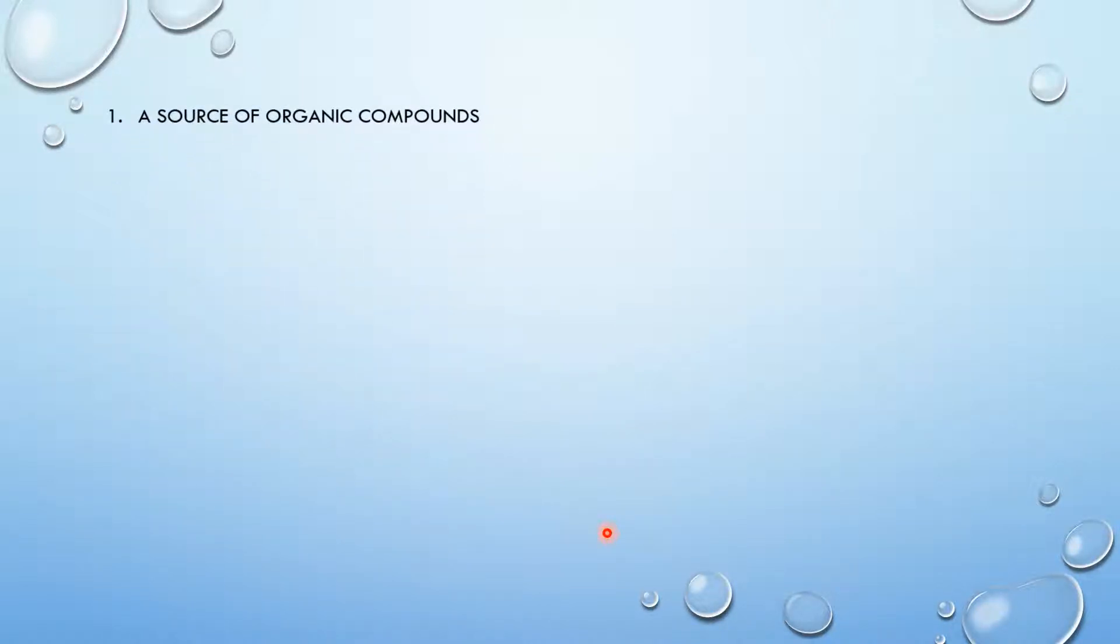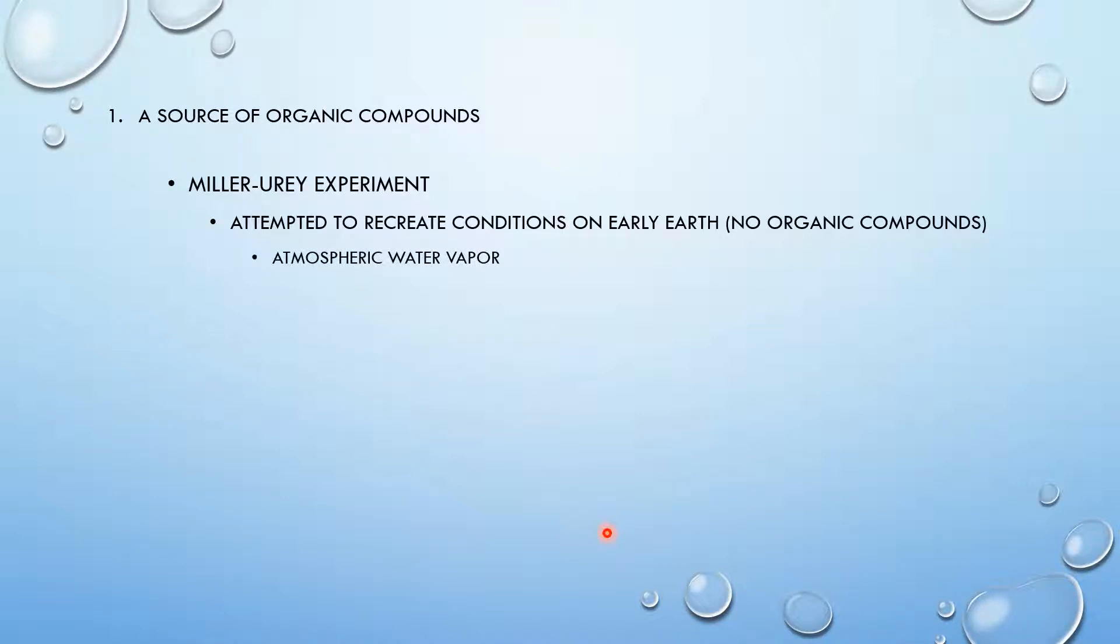So we're first going to examine the first point, a source of organic compounds. So in early, early, early history, before humans were here, before dinosaurs, there were no cells. And cells would have been produced from organic compounds. Now where did those organic compounds come from? The Miller-Urey experiment was the experiment that kind of showed an explanation to how organic compounds would have arisen. So what they did is they attempted to recreate conditions on early Earth, which had no organic compounds.